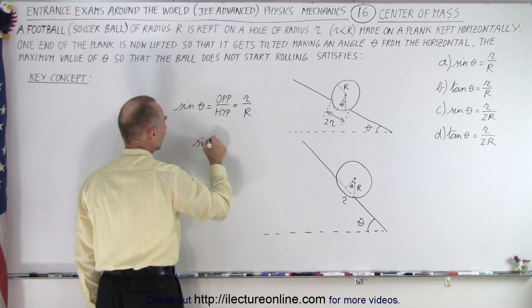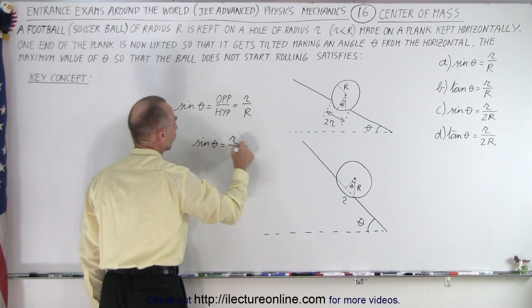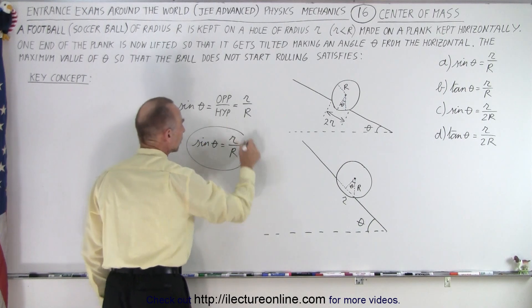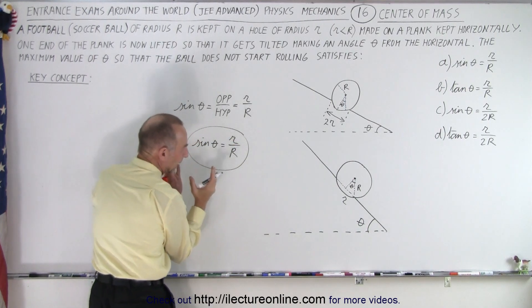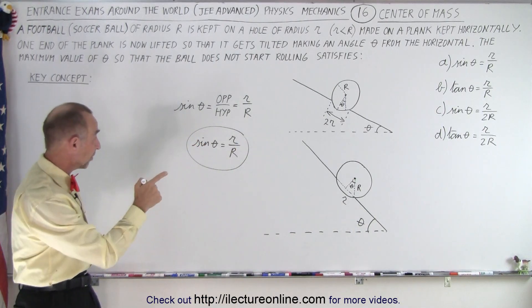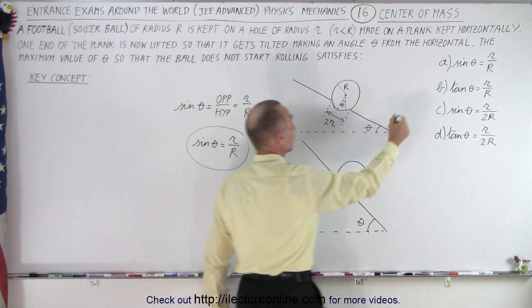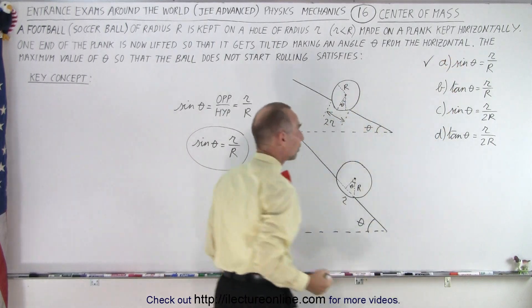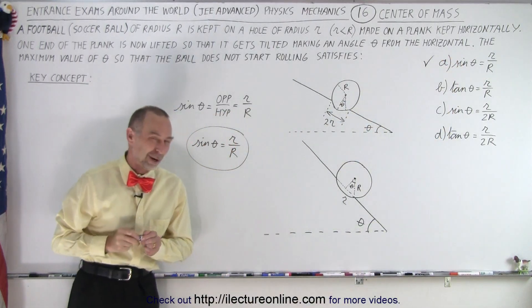So the answer is, when the sine of theta becomes equal to r over R, that is the very limit at which the ball will stay in the hole. Anything bigger than that, the ball will roll out. What answer corresponds to that? It looks like the first answer right here, and so that must be the correct answer for this particular problem.